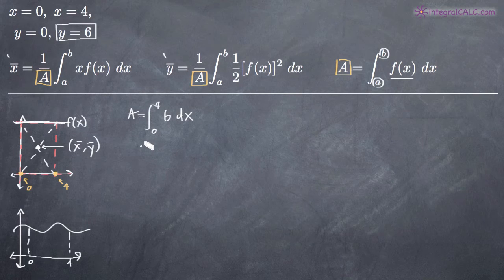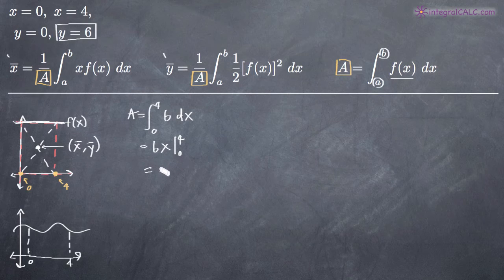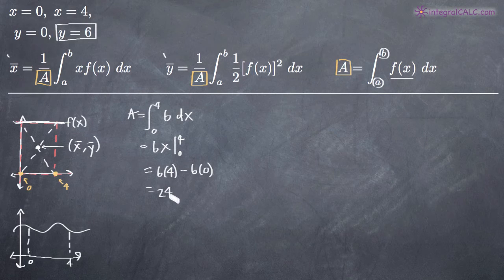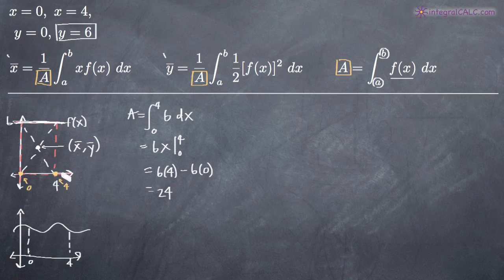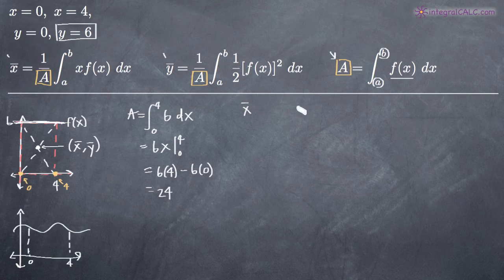Taking the integral of 6 gives us 6x, and we evaluate 6x on the range 0 to 4. We plug in the upper limit first: 6 times 4, then subtract and plug in the lower limit, which is 0. That leaves us with 24 minus 0, which is just 24. That should make sense because the area of this rectangle is 6 times 4 equals 24. So the area A is 24, and now we can plug it into our formulas for the x and y coordinates.